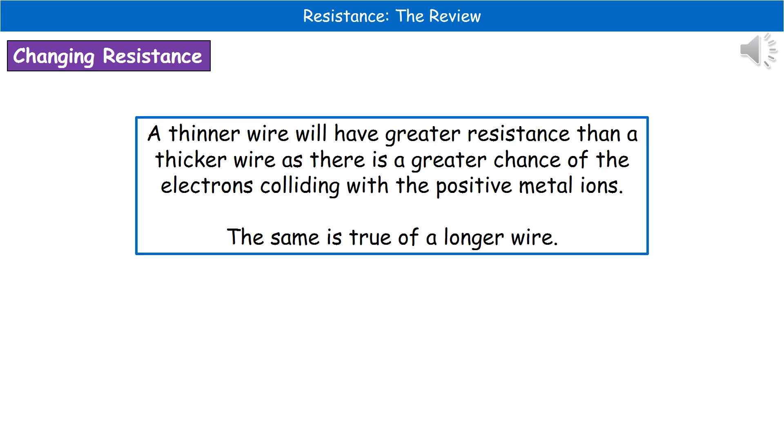The second example of how we could end up changing the resistance with just the piece of wire is by changing the length. If we have a much longer piece of wire, there's a much greater chance of the electrons colliding with the positive metal ions in their passage, and therefore the resistance will increase with the length.